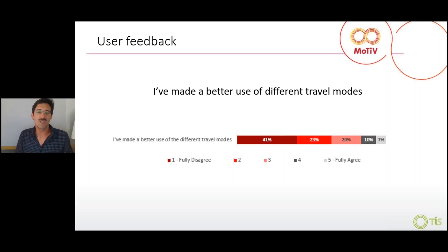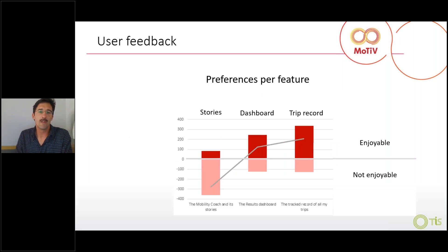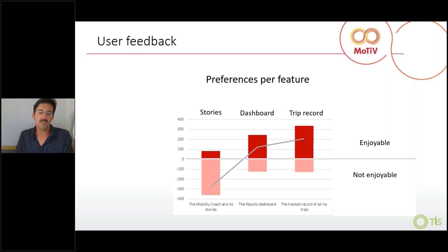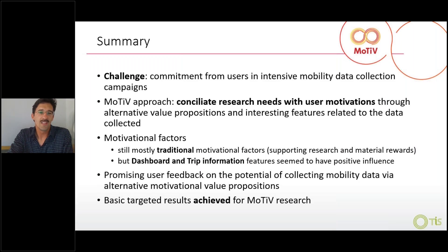We can say we didn't fully achieve the initial intentions at that level. Looking at preferences per feature: the stories element, where we shared interesting stories about travel time, was clearly a failure. The dashboard, with interesting information accessible only once users reported on their trips, was apparently enjoyable. The trip record feature — the ability to see interesting information about specific trips — also seemed appreciated. So at least some of the features built for motivation were motivational.